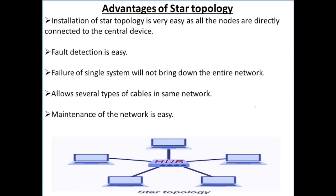Now we have advantages of star topology. Installation of star topology is very easy as all the nodes are directly connected to the central device. Fault detection is very easy. Failure of a single system will not bring down the entire network — if any node has a failure or problem, it will not crash the whole system. Star topology allows several types of cables in the same network, like coaxial cable or twisted pair cable. Maintenance of the network is also very easy.